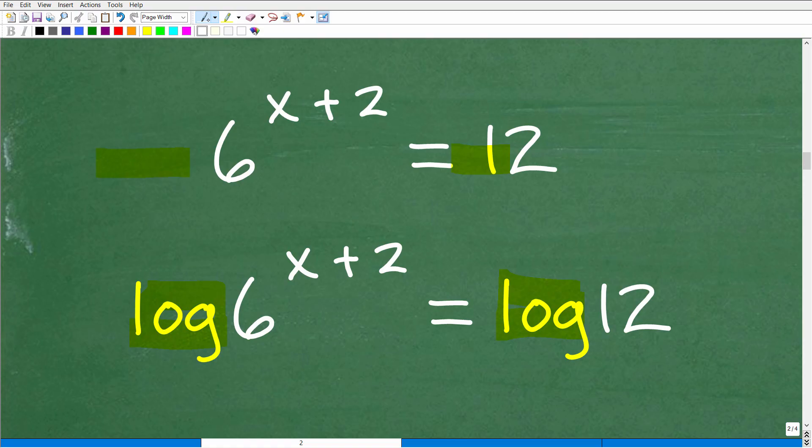All right, now before we take a look at the next step, I want you to realize that the logarithm of a number, like LOG of 12, this is a decimal value. If you have your calculator handy, you could just type that in, put 12 in, hit the LOG button or LOG 12, and you'll see that this is just some sort of decimal.